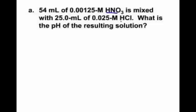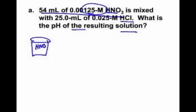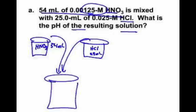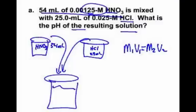All right. Now we have two strong acids — nitric acid and hydrochloric acid. What's the pH of the resulting solution? This is a pretty tricky AP question. We've got two strong acids. We need to do an M1V1 = M2V2 problem because I'm going to pour them together. One beaker has 54 mL of nitric acid, another has 25 mL of hydrochloric acid. When you pour them together, we dilute the acid, so we use M1V1 = M2V2 to find the final molarity of each acid separately. Let's do HNO3 first.